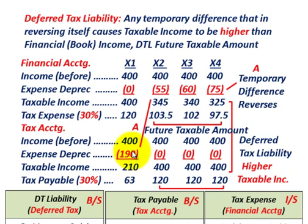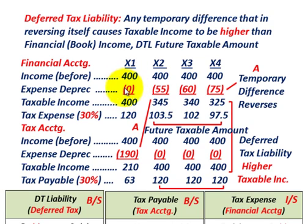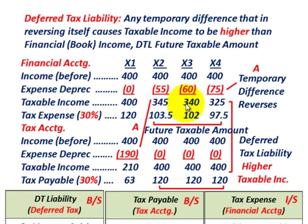For financial accounting, we had no recognition in the first year but recognized that depreciation expense over the next three years. This is what we call a temporary difference — it reverses itself. For financial accounting, we had zero expense in year one and recognized $190,000 over the next three years, whereas for tax accounting we recognized the entire expense in year one and zero in the next three years. This is where our taxable income is higher than our book income based on this temporary difference.